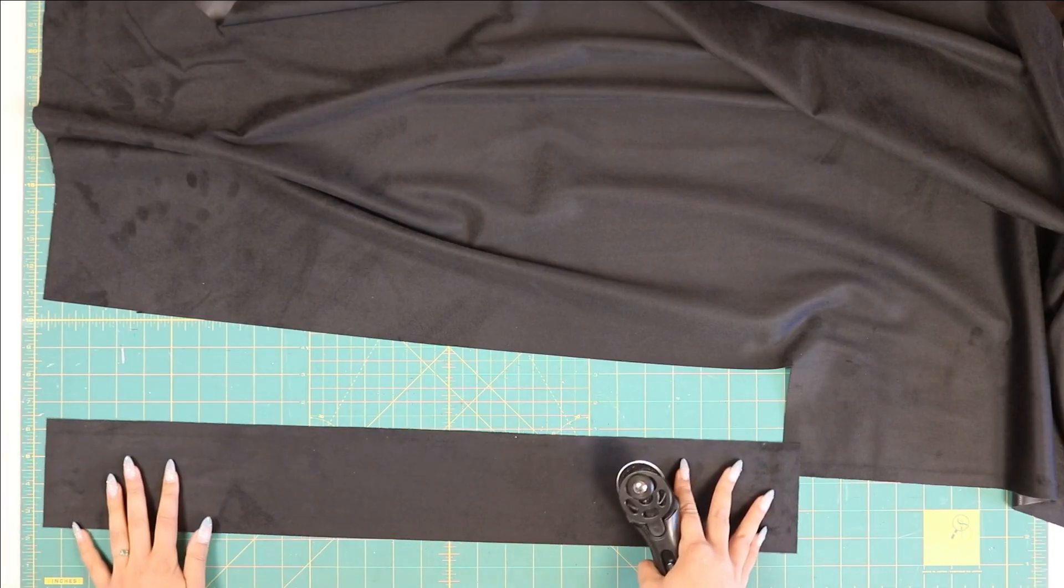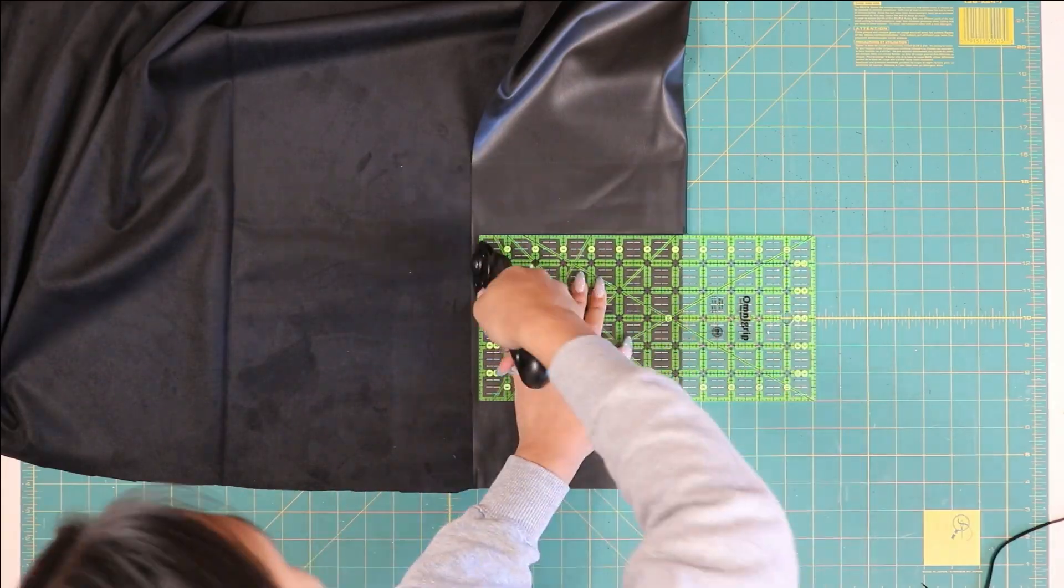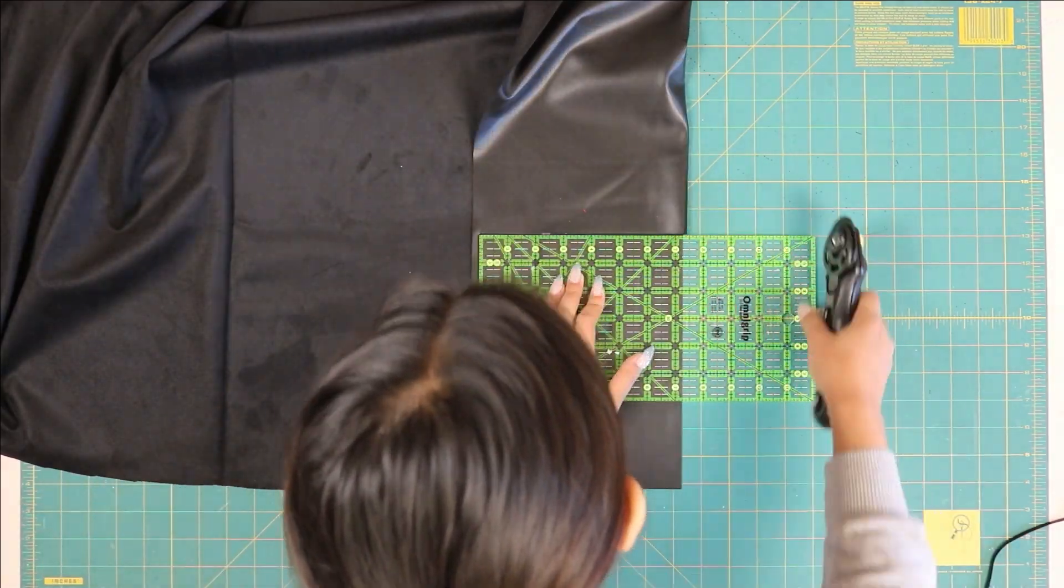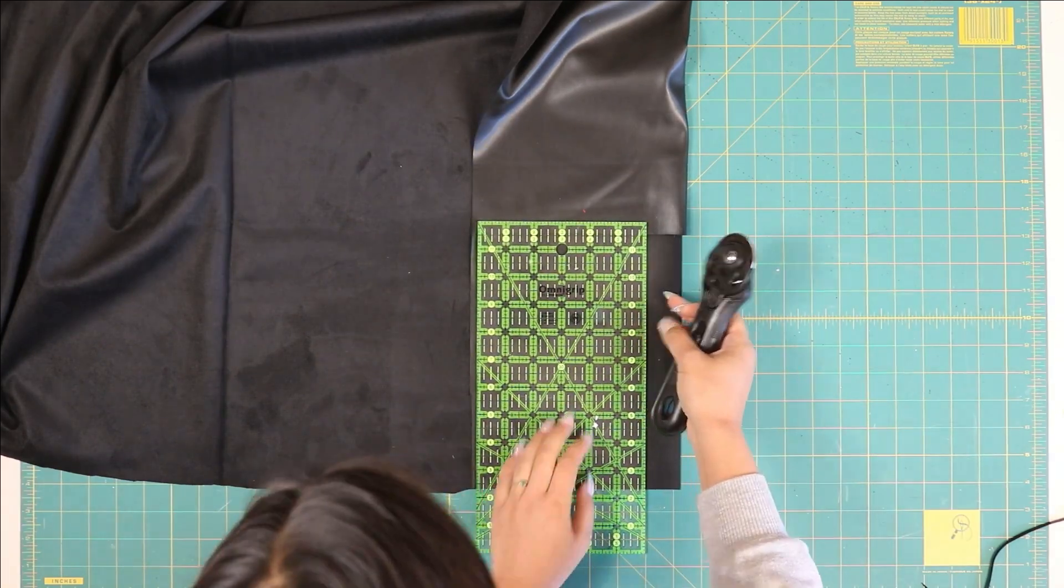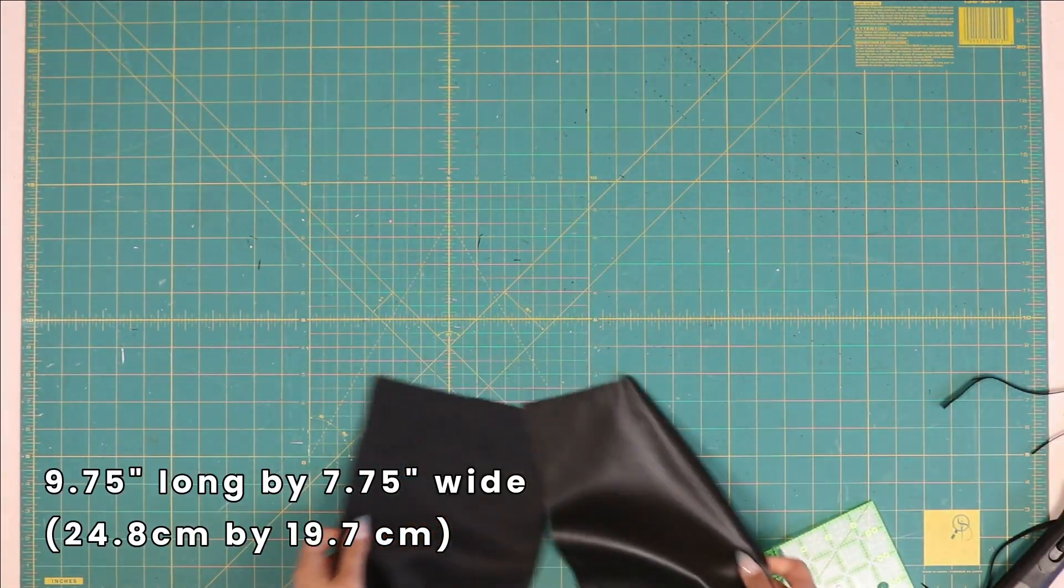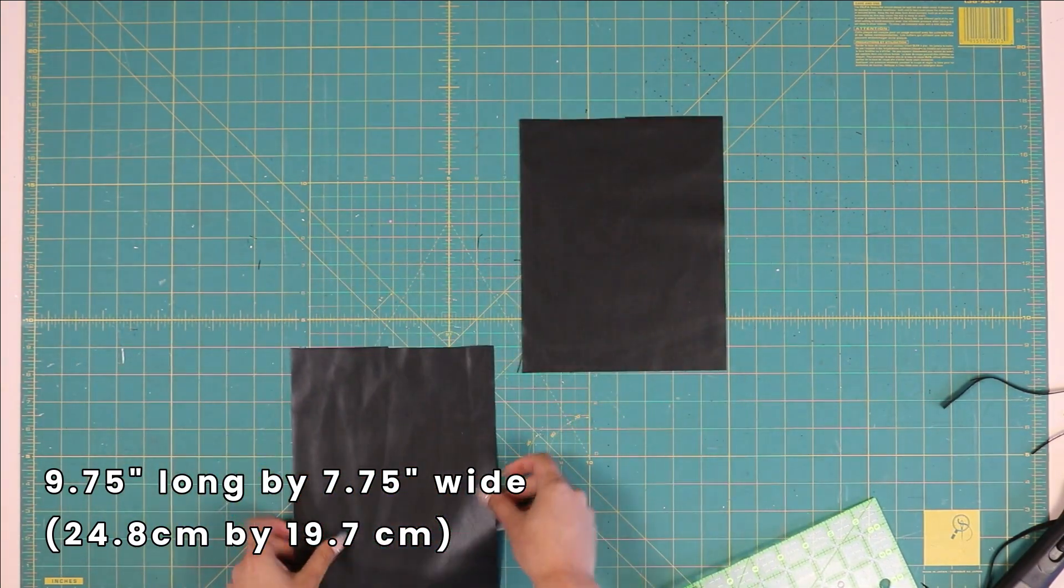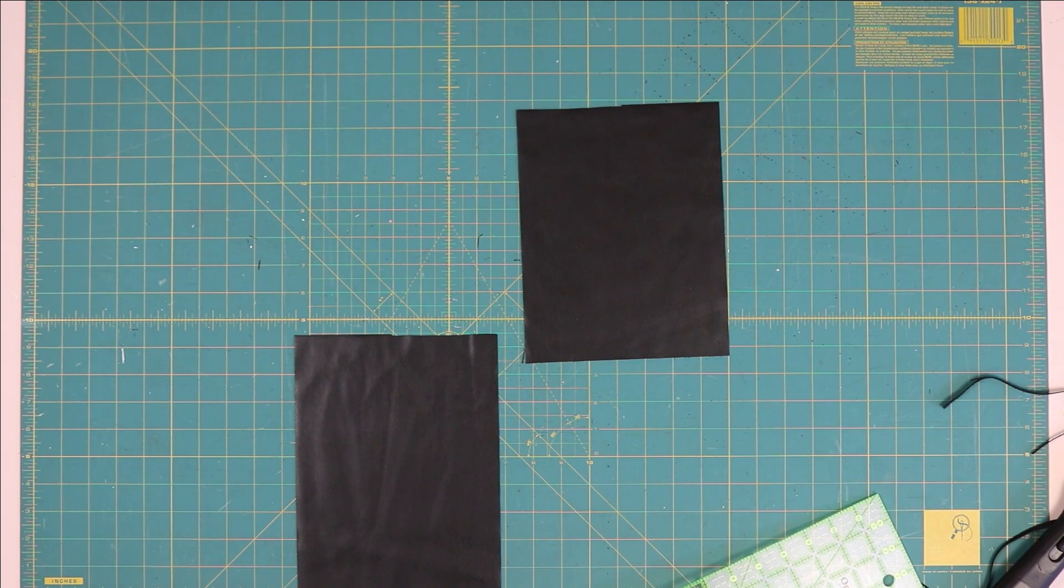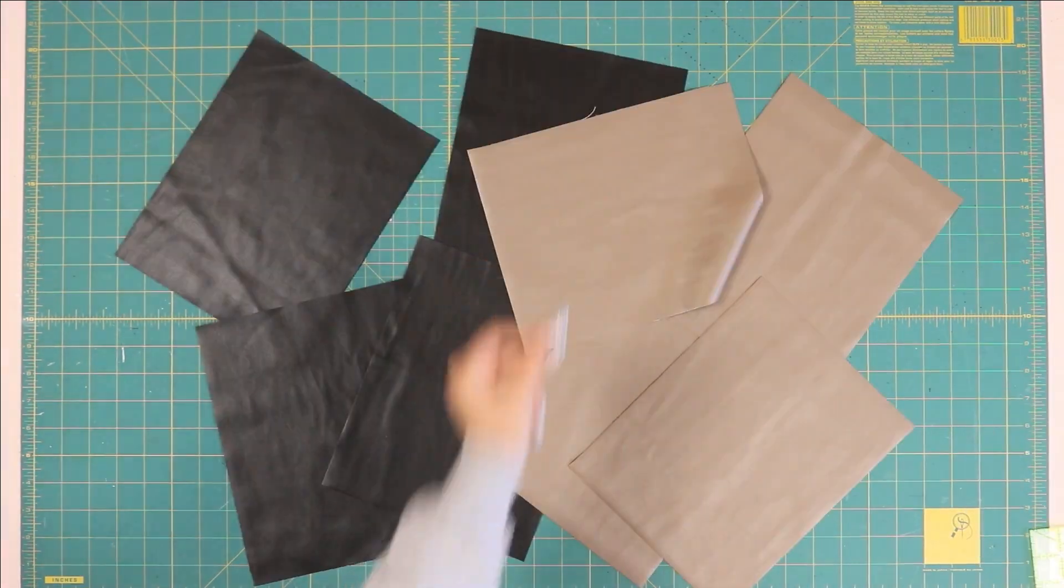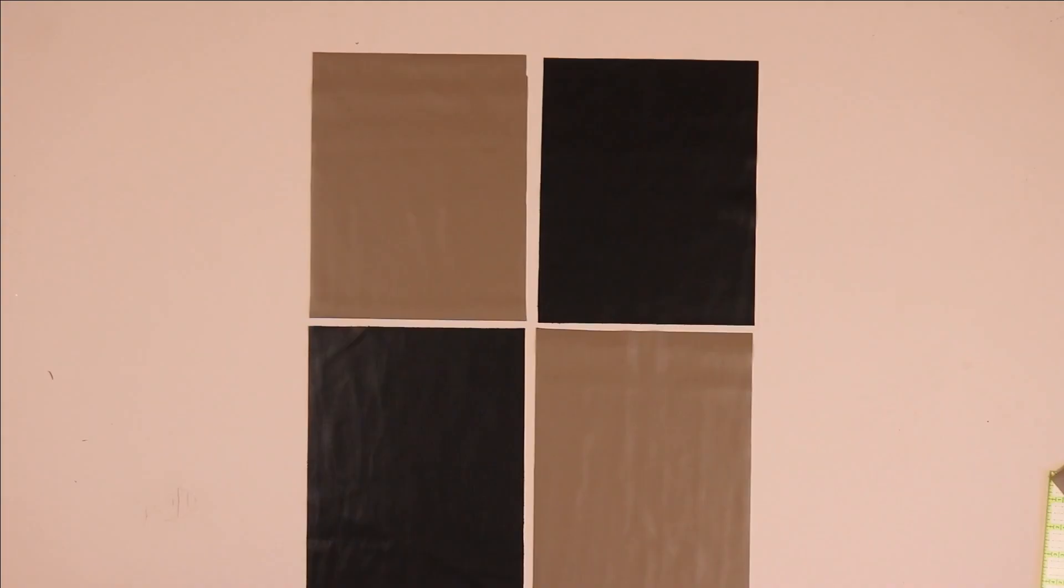Next, I'm going to cut out the body of the bag, which is comprised of eight rectangles, four on each side. Each rectangle is going to be 9 and 3/4 inches long and 7 and 3/4 inches wide. Since this is a checkered design, you're going to cut out four of each color.